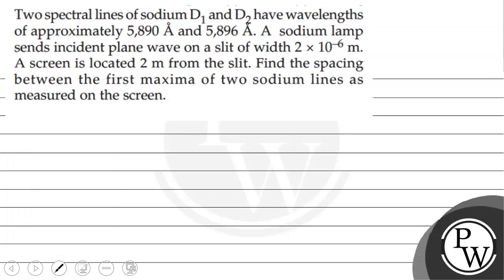Hello sir. Let's shift to the question. The question says that two spectral lines of sodium, D1 and D2, have wavelengths of approximately 5890 angstroms and 5896 angstroms. A sodium lamp sends incident plane wave on a slit of width 2×10^-6 meters. A screen is located 2 meters from the slit. Find the spacing between the first maxima of two sodium lines as measured on the screen.